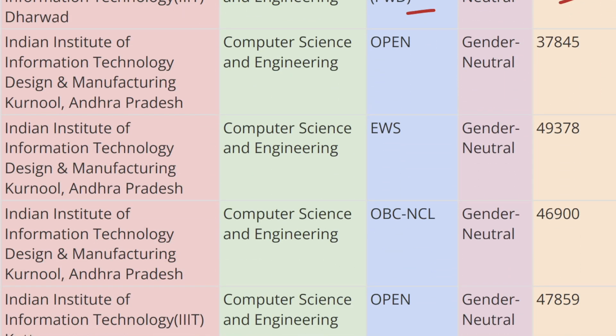Moving ahead, we have IIIT Kurnool, Andhra Pradesh. For Open category the cutoff rank is 37,845, for EWS category the cutoff rank is 49,378, and for OBC-CL category the cutoff rank is 46,900.